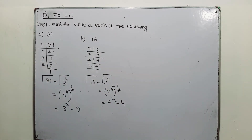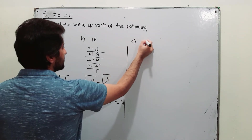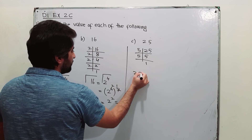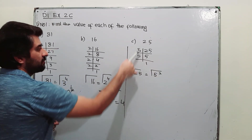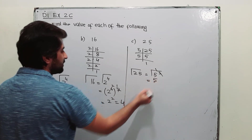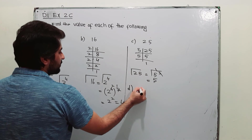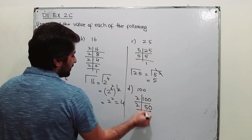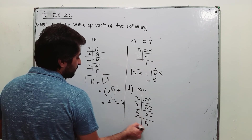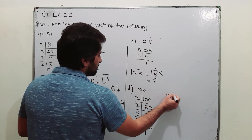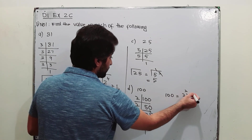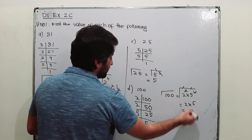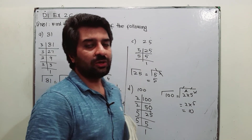Part c is the square root of 25, and part d is the square root of 100. For 25: prime factorization gives 5 times 5, so 25 is 5 squared. The square and square root cancel, giving an answer of 5. For 100: prime factorization gives 2 squared into 5 squared. Taking the square root, the squares and square root cancel, giving 2 into 5, which is 10.